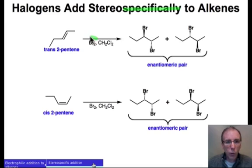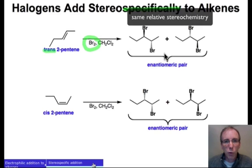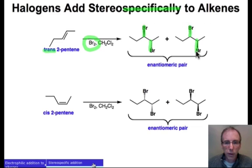How does that work when we're adding bromine to an alkene? The stereochemistry of the reactant in this case is trans, and we obtain two products. Notice that both products have the same relative stereochemistry — in one case the bromine is coming out and the other is going back, and the second product has exactly the same relative stereochemistry: one bromine going back and the other coming out. These two products are related as an enantiomeric pair, but the stereospecificity means that the trans reactant gives the relative stereochemistry where one bromine is coming out and the other is going back.